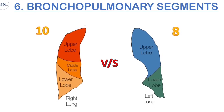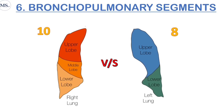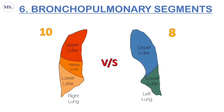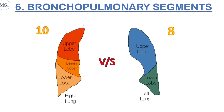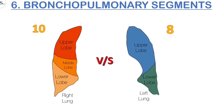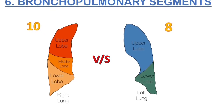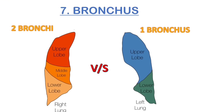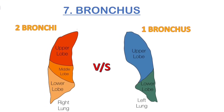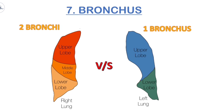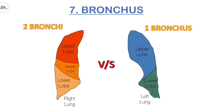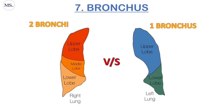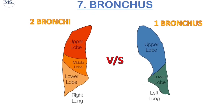If you want to know more about segments, you can watch my previous video about bronchopulmonary segments to clearly understand the differences between the right lung and the left lung. The seventh difference is the bronchus. In the right lung there are two bronchi, but in the left lung there is only one bronchus.